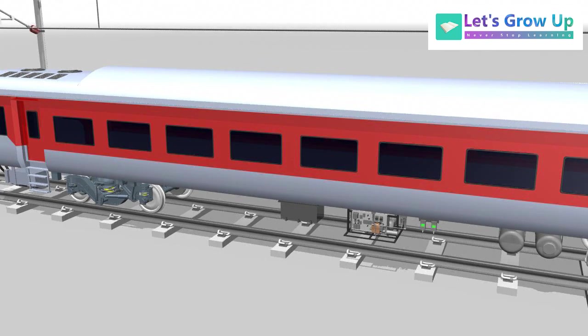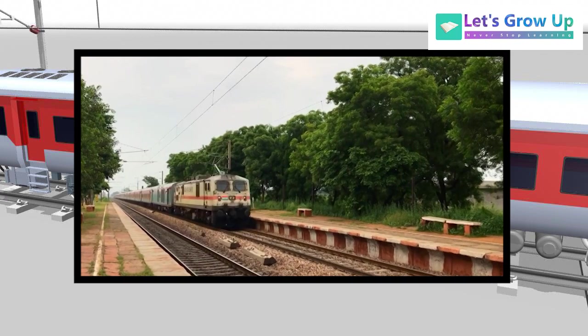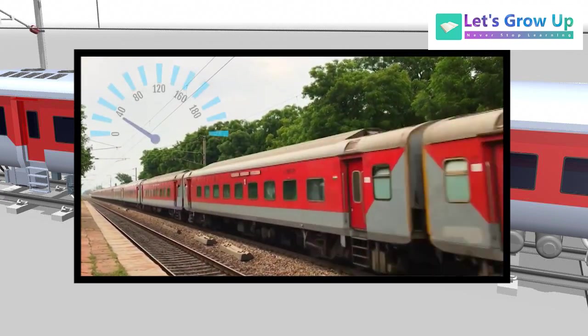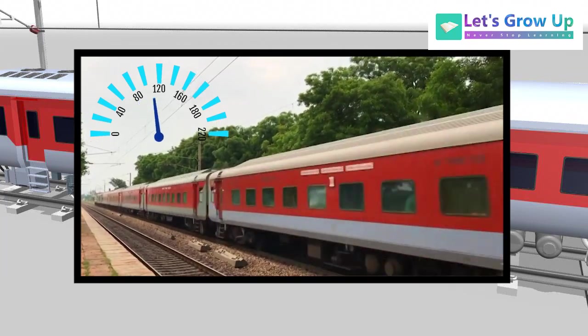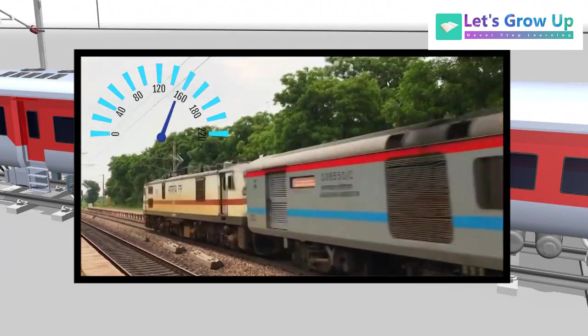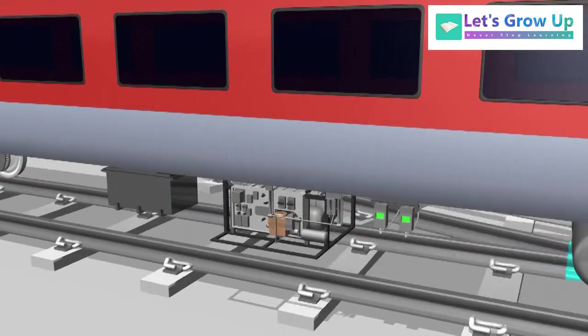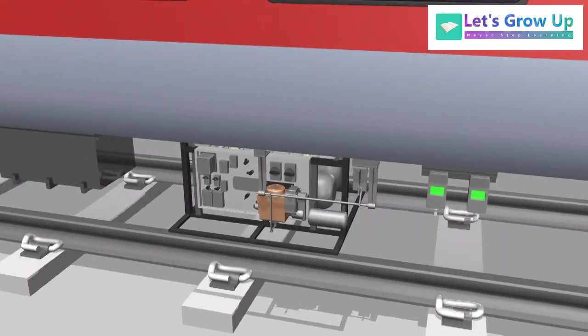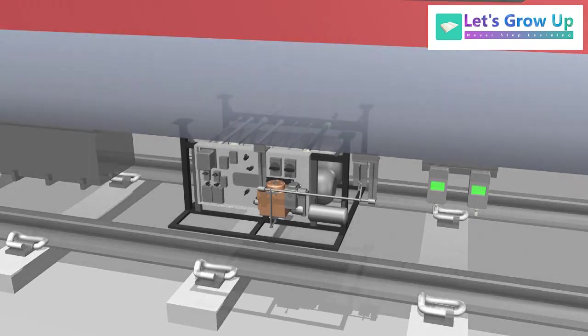Why are we talking about the brake control system? The LHB coach can run up to 160 to 180 kmph, and brake system equipment helps during that time. It is a very safety-relevant subsystem of the train. It allows reliable stopping of the train in all operating conditions.